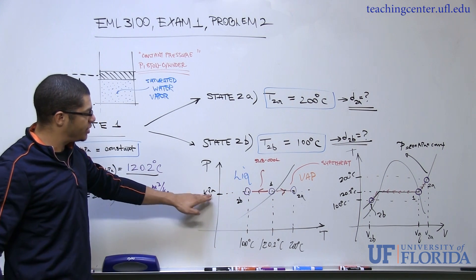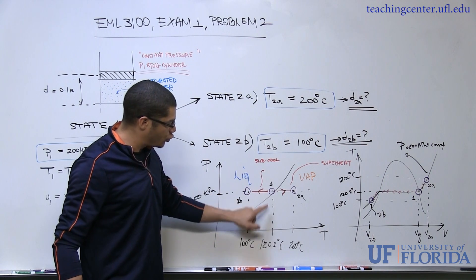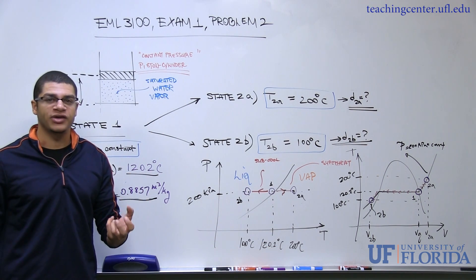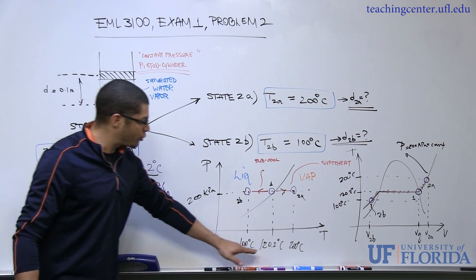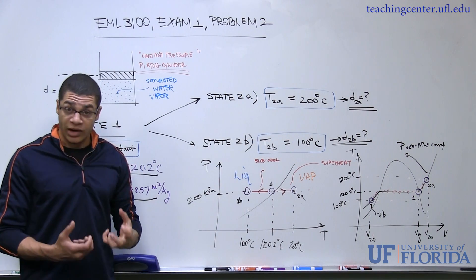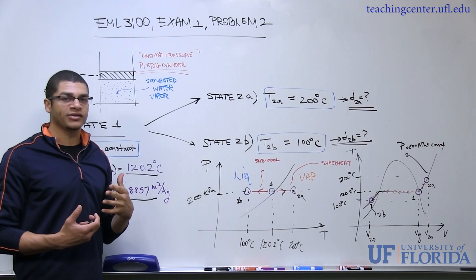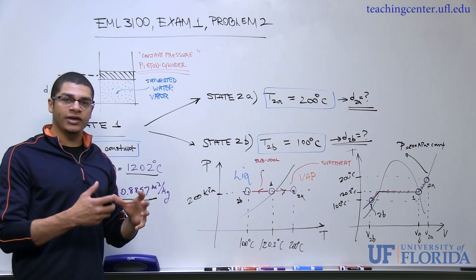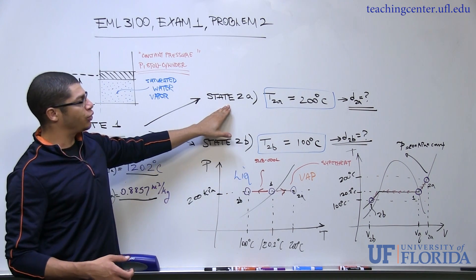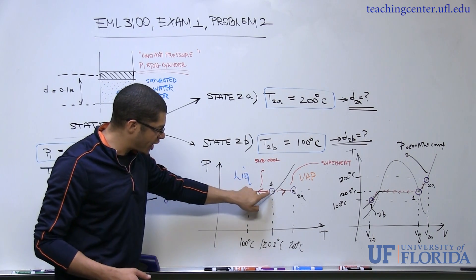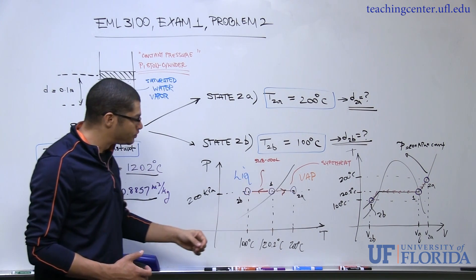With 200 kPa given and knowing we exist on the curve as a saturated vapor, we can go to our saturation tables for water and find that the corresponding saturation temperature is 120.2 degrees centigrade. With this information, we can compare our other two states relative to that temperature and, in addition to our constant pressure constraint which tells us how the process will proceed thermodynamically, we can start to understand what happens to the working fluid as we move from state one to either 200°C or 100°C.